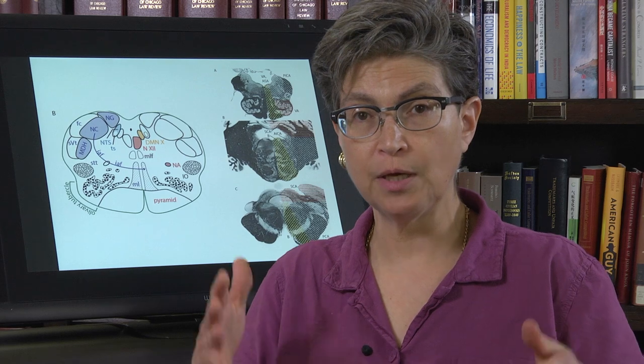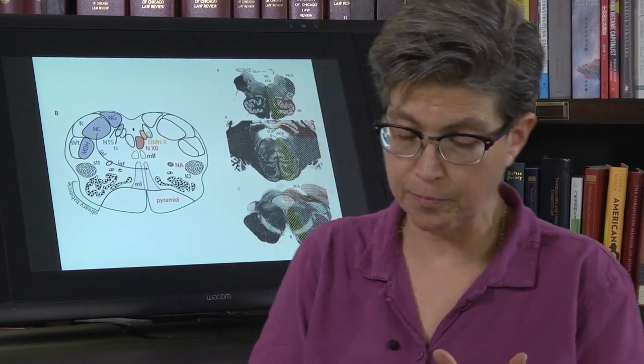So this is Wallenberg syndrome, and it is diagnostic. The big three that are going to lead you to diagnose it right off the bat are: loss of pain and temperature on the contralateral body, loss of pain and temperature on the ipsilateral face, and a Horner syndrome. Don't miss it.